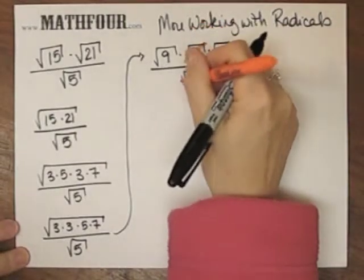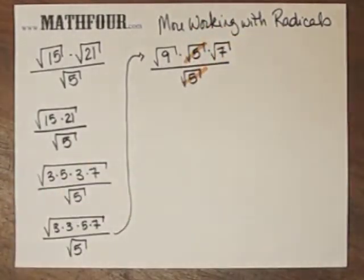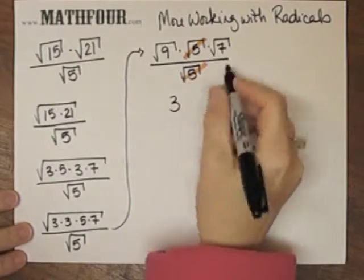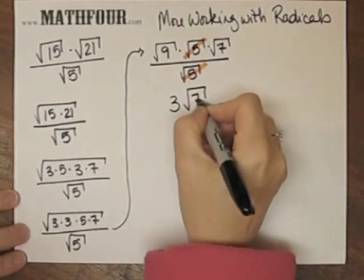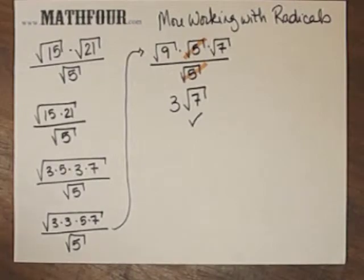So these cancel. Square root of 9 is 3, and square root of 7 just has to exist like that. So there, I'm done.